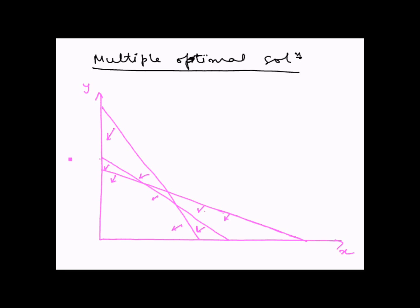In that case, our feasible solution region will be represented by the boundaries that I am going to draw now. So our feasible solution region will be represented by this, this, and this.